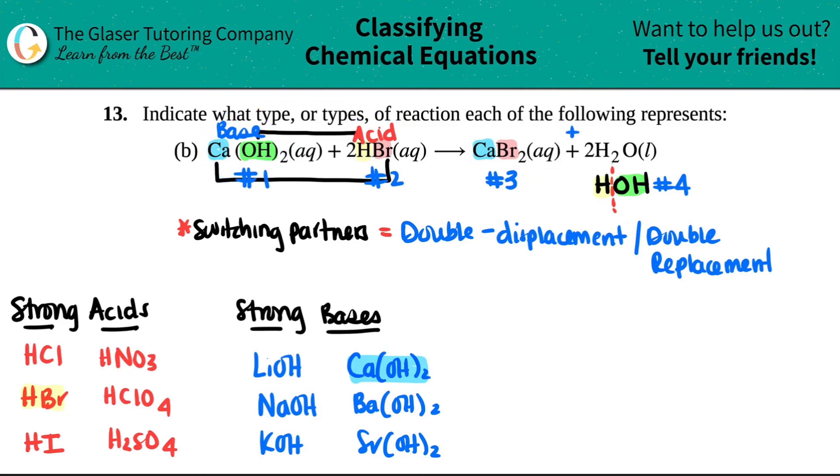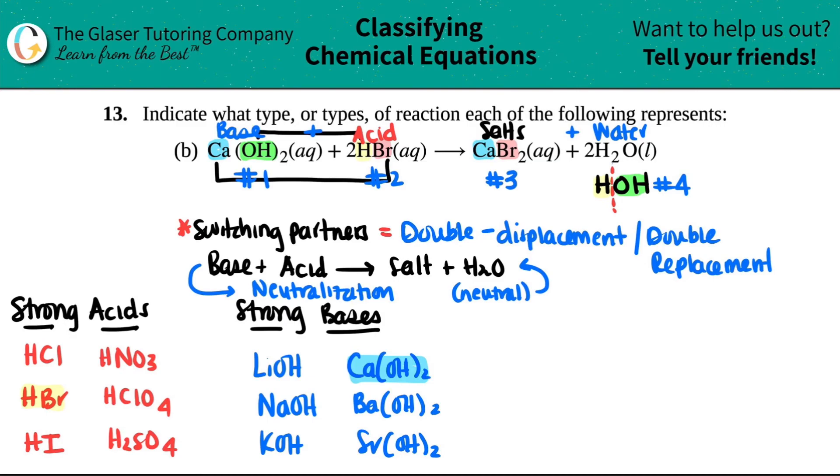So I have a base here. I have a base plus acid yields something plus water. This is just a normal ionic compound, which is what this is—calcium is a metal, bromine is a non-metal. The other word that we can say for ionic compounds are salts. So in this case, it's base plus acid will always yield salt plus water. When you see this going on, this is called a neutralization reaction.